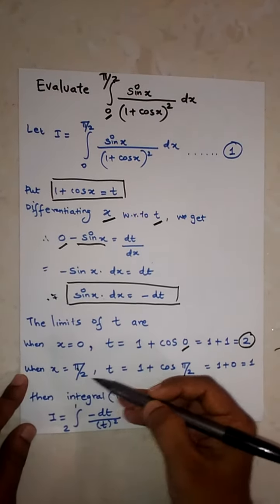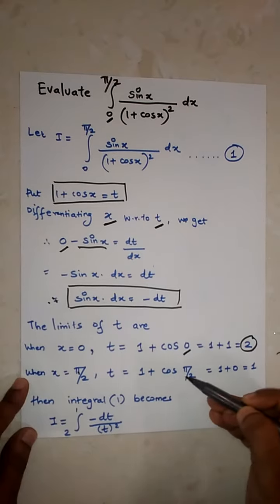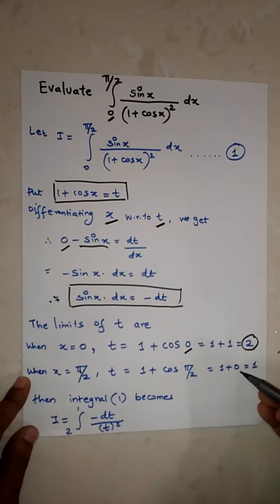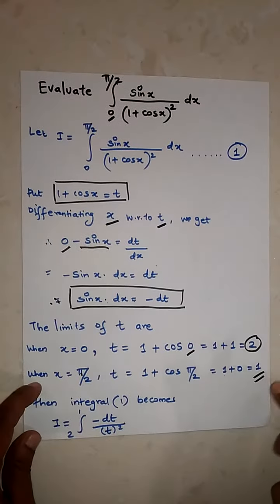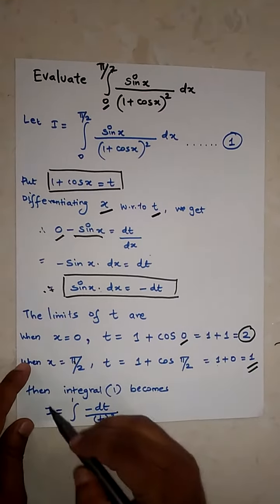When x equals π/2, t equals 1 plus cos(π/2), which equals 1 plus 0, which equals 1. So instead of π/2, we will write 1.